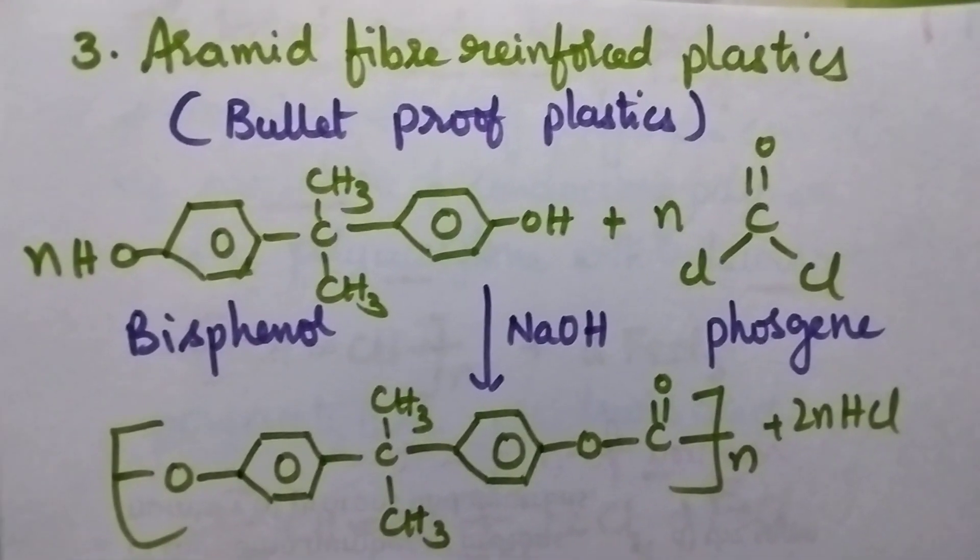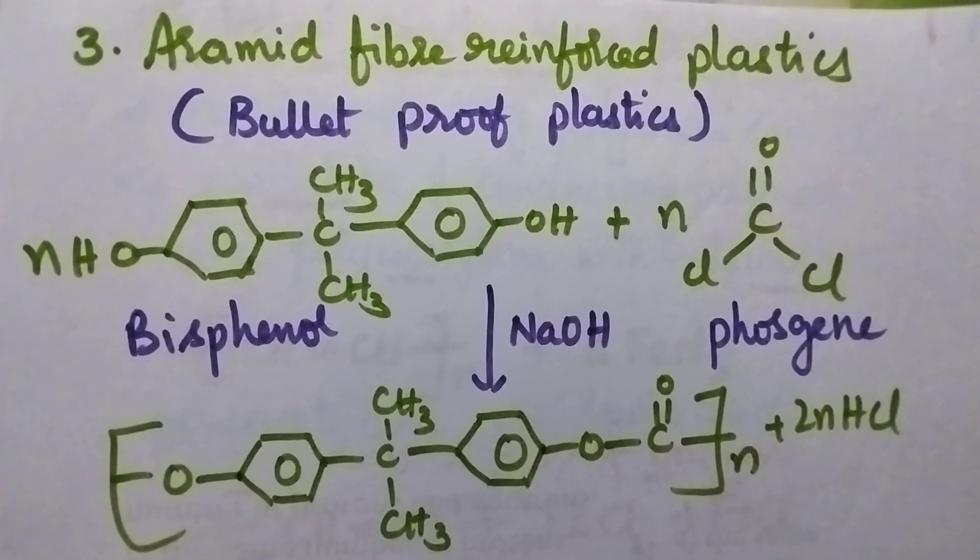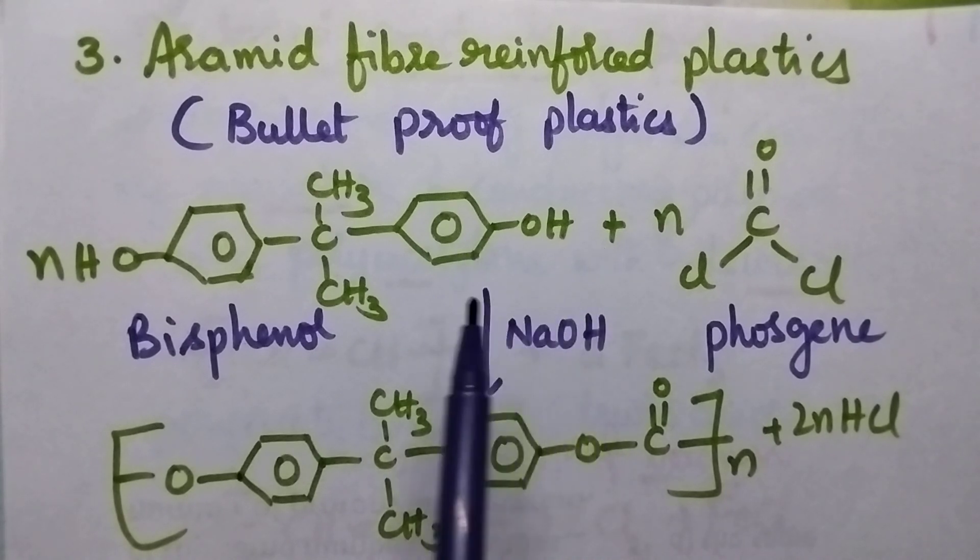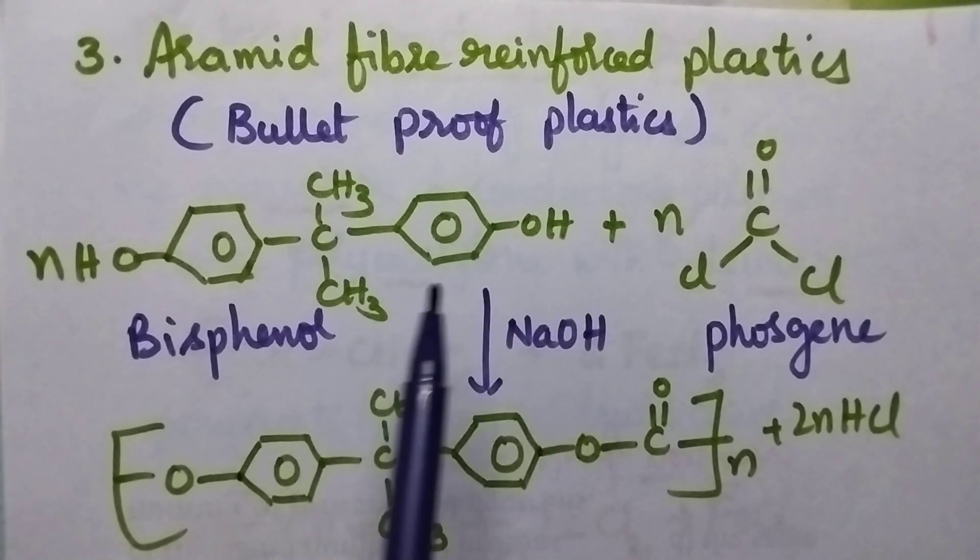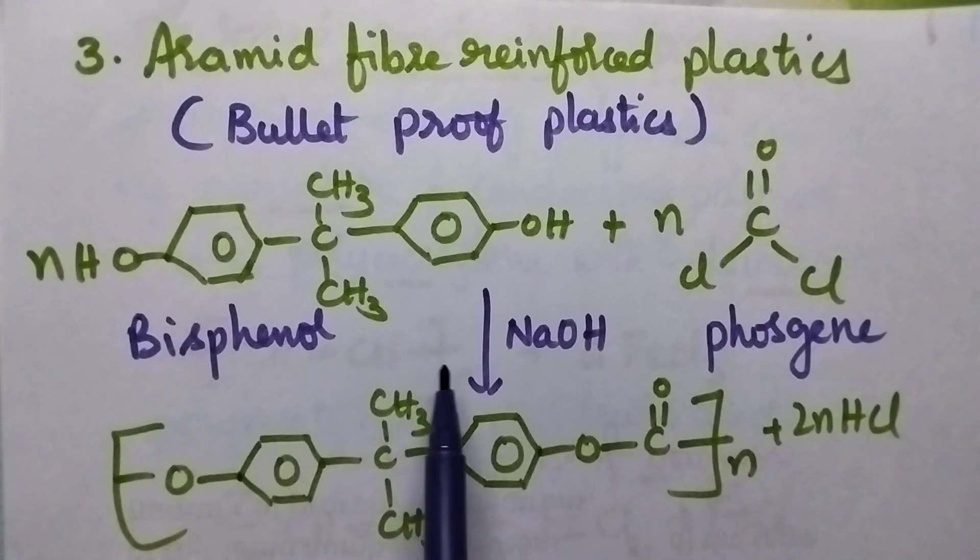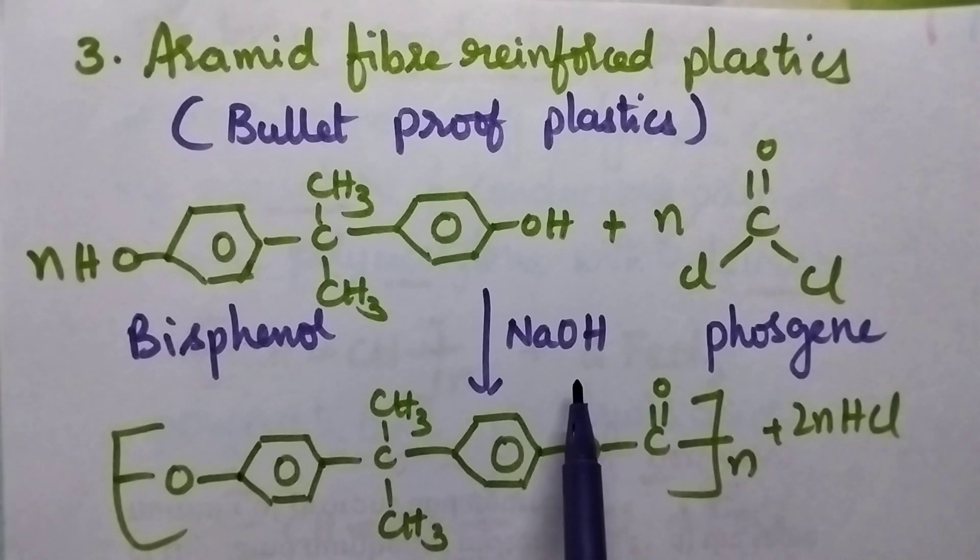Coming to the third category, it is called aramide fiber reinforced plastics. They can also be called bulletproof plastics. Bulletproof plastics can be prepared from bisphenol and phosgene. Bisphenol undergoes condensation with phosgene in the presence of alkali like NaOH.